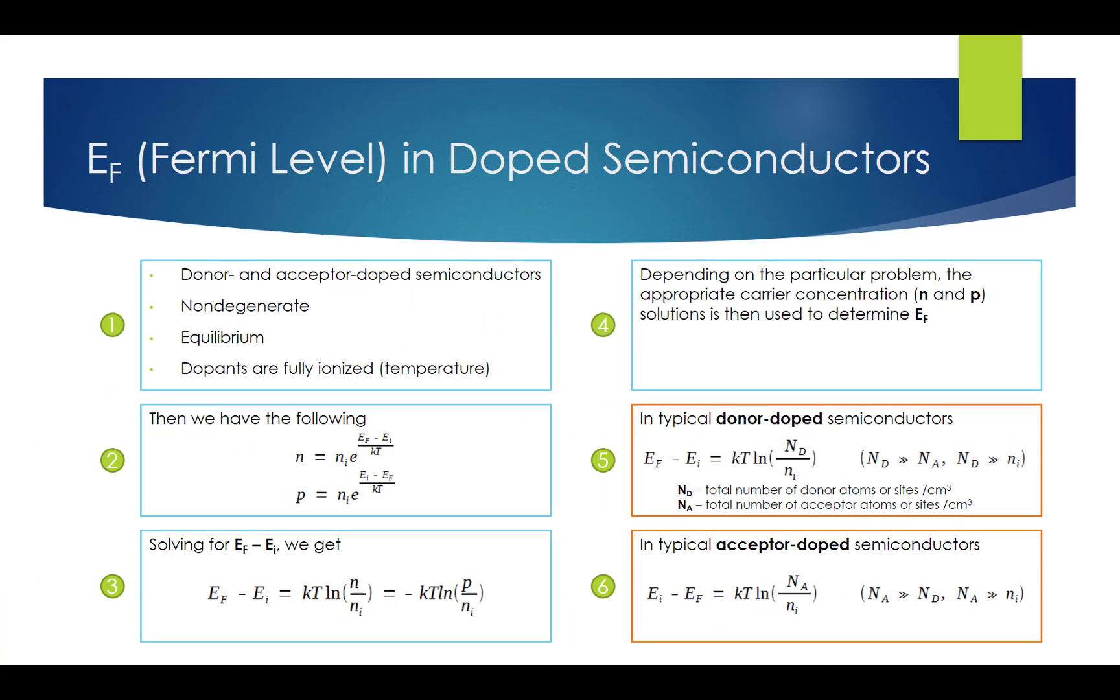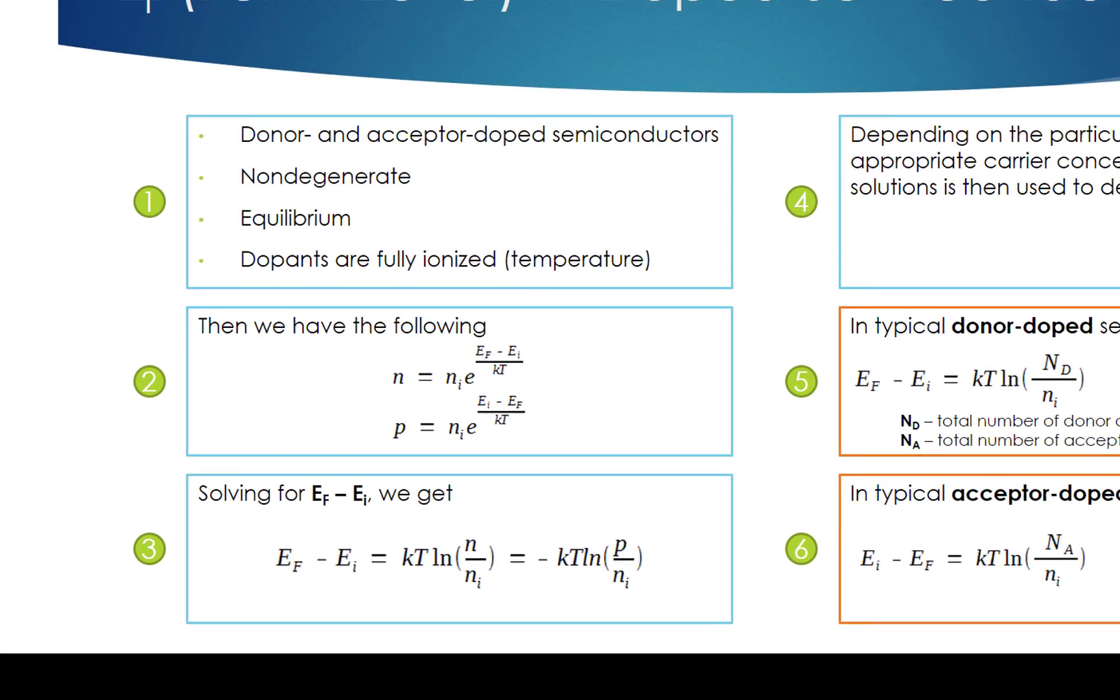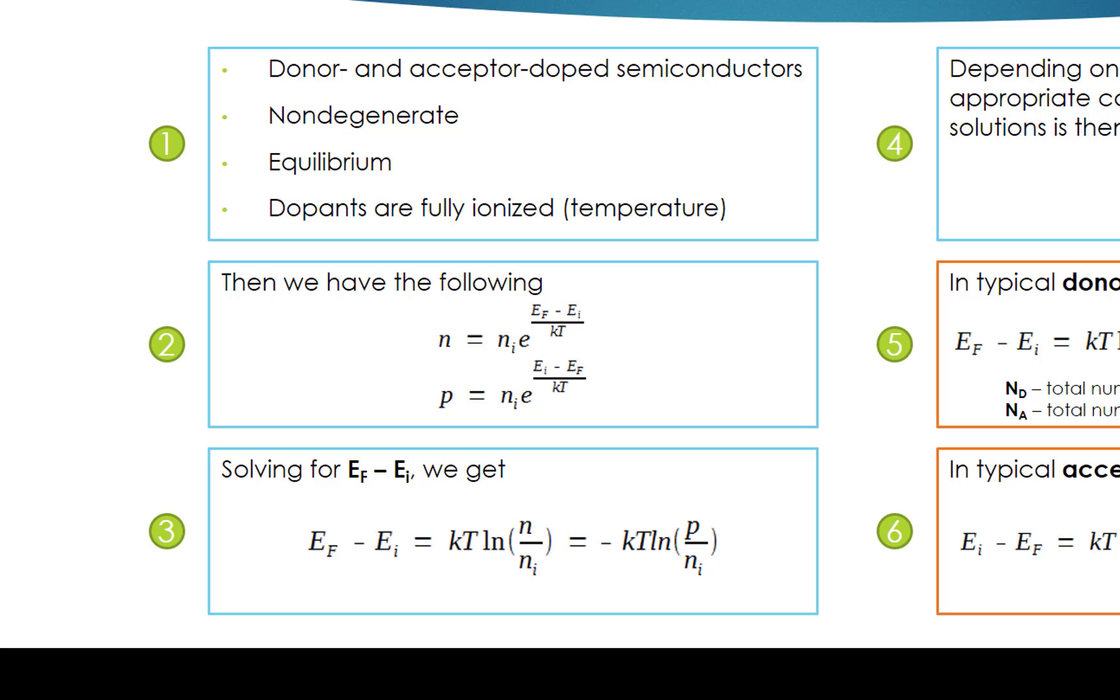Now let's discuss the calculation of Fermi level EF in doped semiconductors. The general assumption is that donor and acceptor doped semiconductors are non-degenerate in equilibrium condition and maintained at temperatures where the dopants are fully ionized.